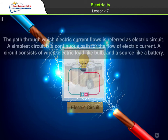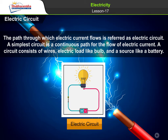Electric circuit: The path through which electric current flows is referred to as an electric circuit. A simplest circuit is a continuous path for the flow of electric current. A circuit consists of wires, an electric load like a bulb, and a source like a battery.